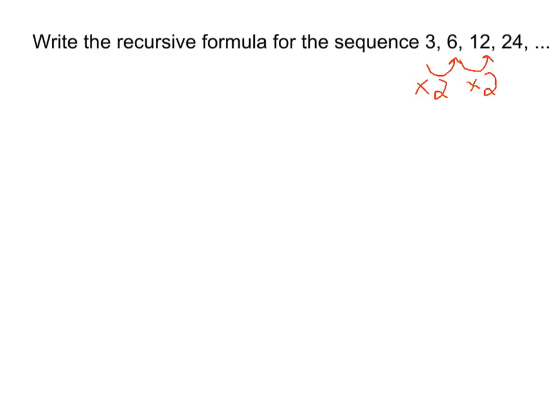So we're going to write a formula that says exactly that. To find any term, a sub n, we're going to take the previous term, a sub n minus 1, and multiply it times 2.